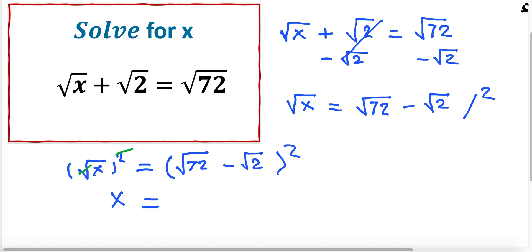So the first factor is squared minus 2 times the square root of 72 times the square root of 2, plus the square root of 2 squared.